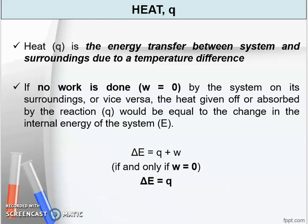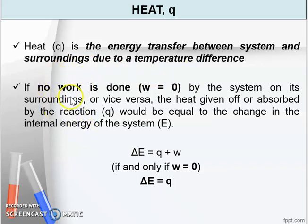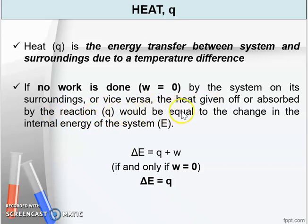Next is heat. Heat, symbol Q, is the energy transfer between system and surrounding due to a temperature difference. Regarding delta E: if no work is done, meaning W equals 0 by the system on its surroundings or vice versa, the heat given off or absorbed, Q, would be equal to the change in the internal energy of the system.